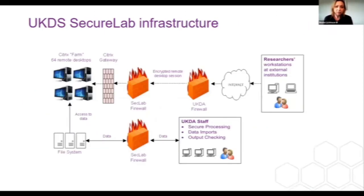The UKDS Secure Lab infrastructure is built around Citrix XenDesktop and Citrix NetScaler, which serve up virtual desktops to external researchers via a secure encrypted SSL session. Additionally, there is a restricted user IP address. Architecturally, there are two firewalls in place: the main UKDA primary firewall and a second internal firewall.